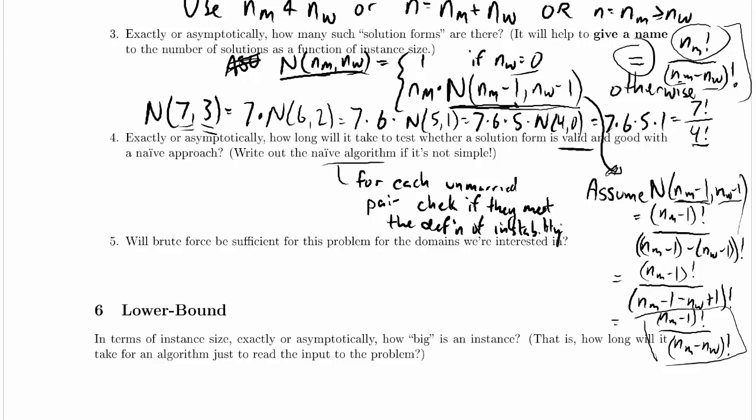And then we can probably make it take constant time to compare the rankings of the two. And so it should be no problem. So really, the hard part of this is the for each unmarried pair part.